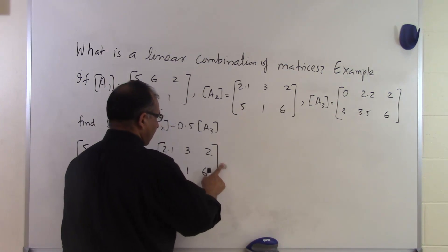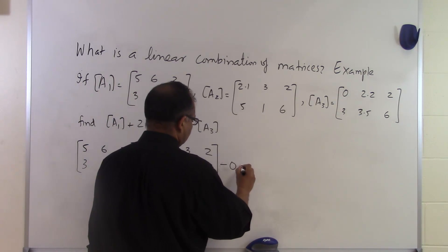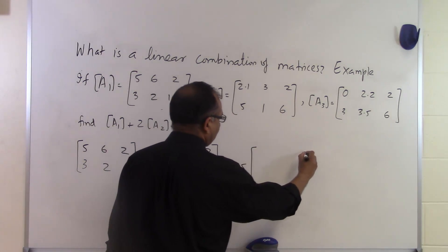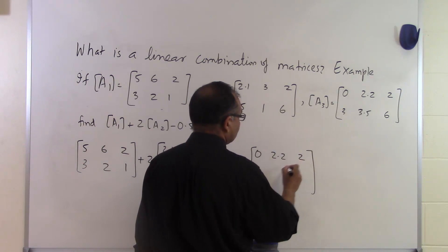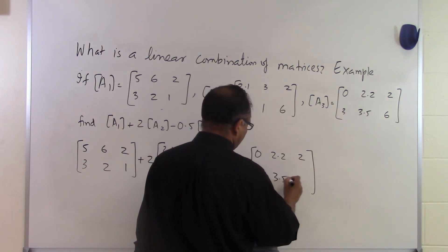And then I'm going to take the last matrix which is given and I'm going to multiply it by minus 0.5 and I'm putting the A3 matrix here, 0, 2.2, 2, 3, 3.5, and 6.